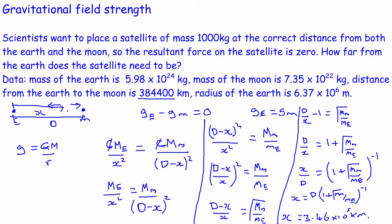In this video, we recapped radial and uniform fields, introduced what gravitational field strength is, and saw that we can use the equation g = GM/r² to calculate it. Importantly, it doesn't depend upon the mass of the object in the gravitational field — only the mass of the planet providing the field. We did a couple of calculations to show how you can use this. Thank you very much for watching, and I'll see you again soon.